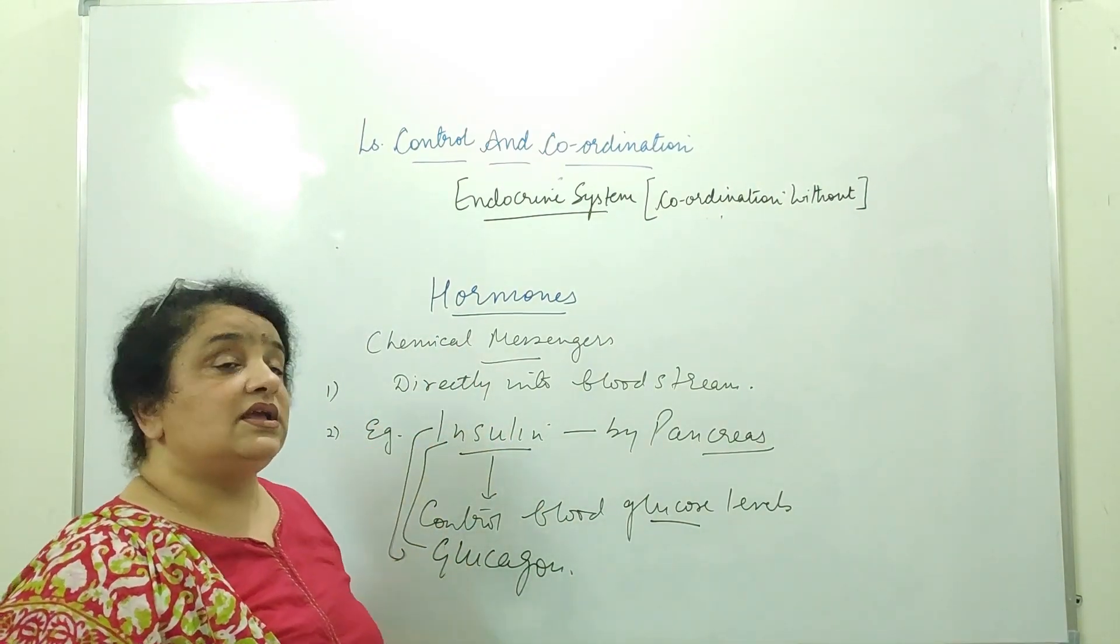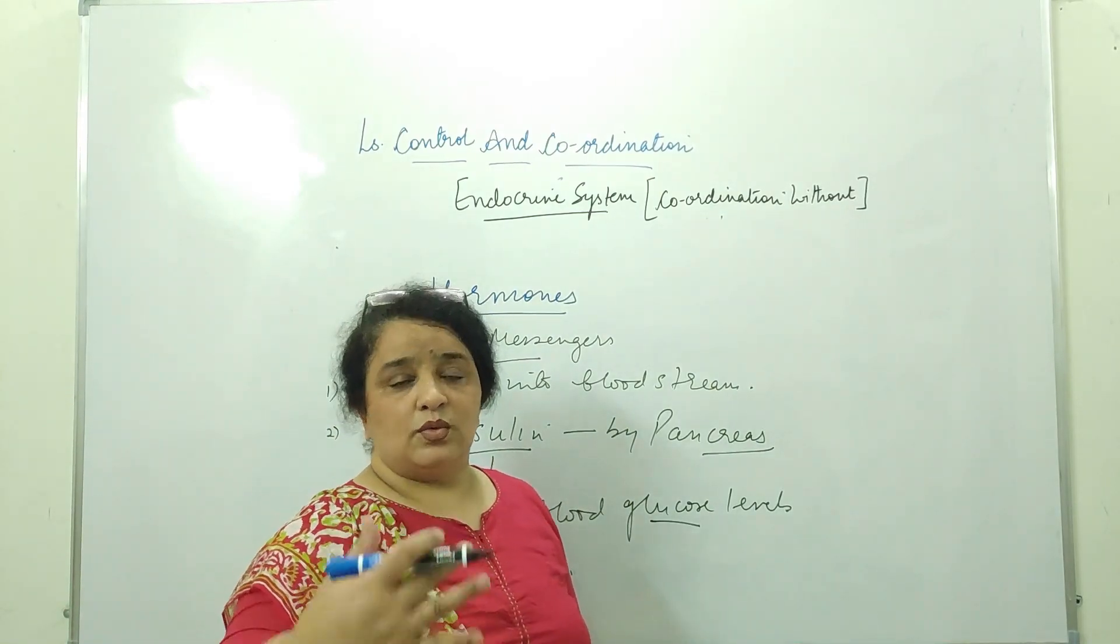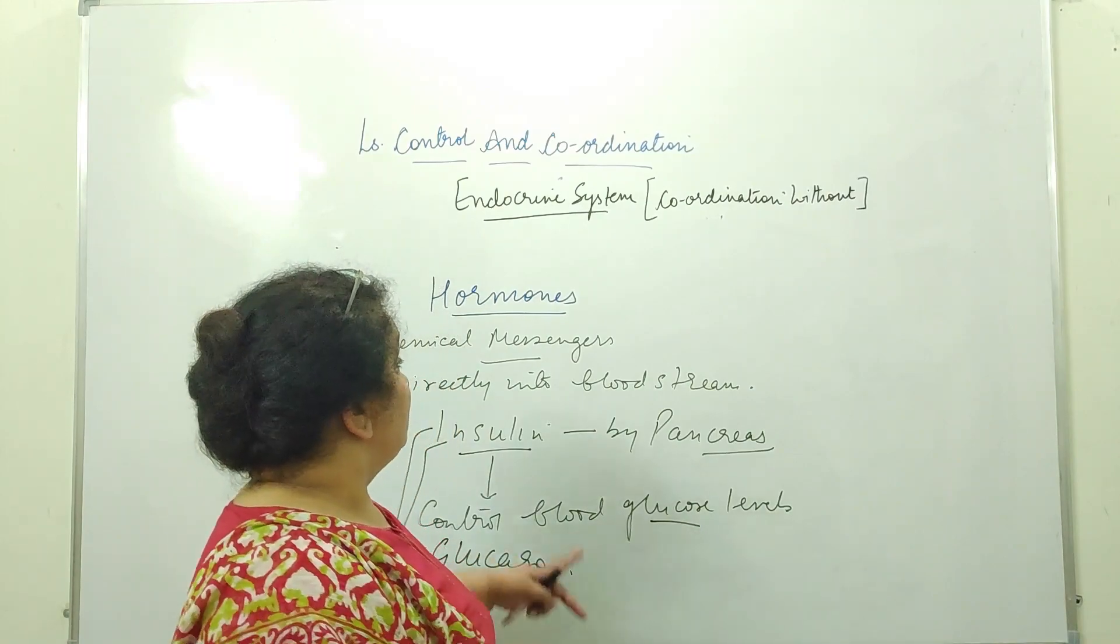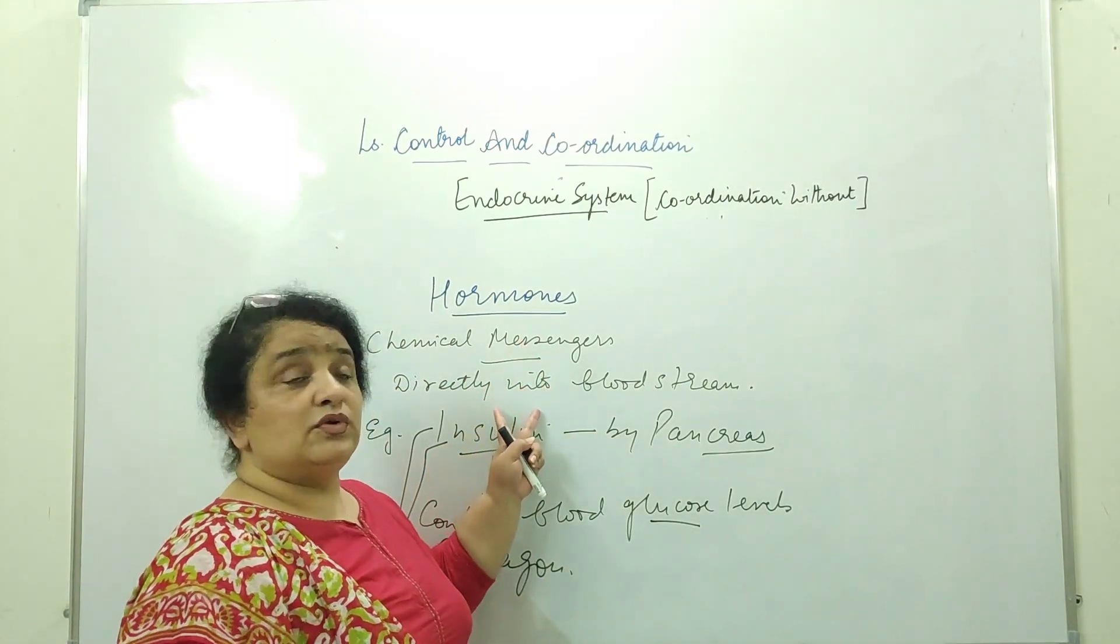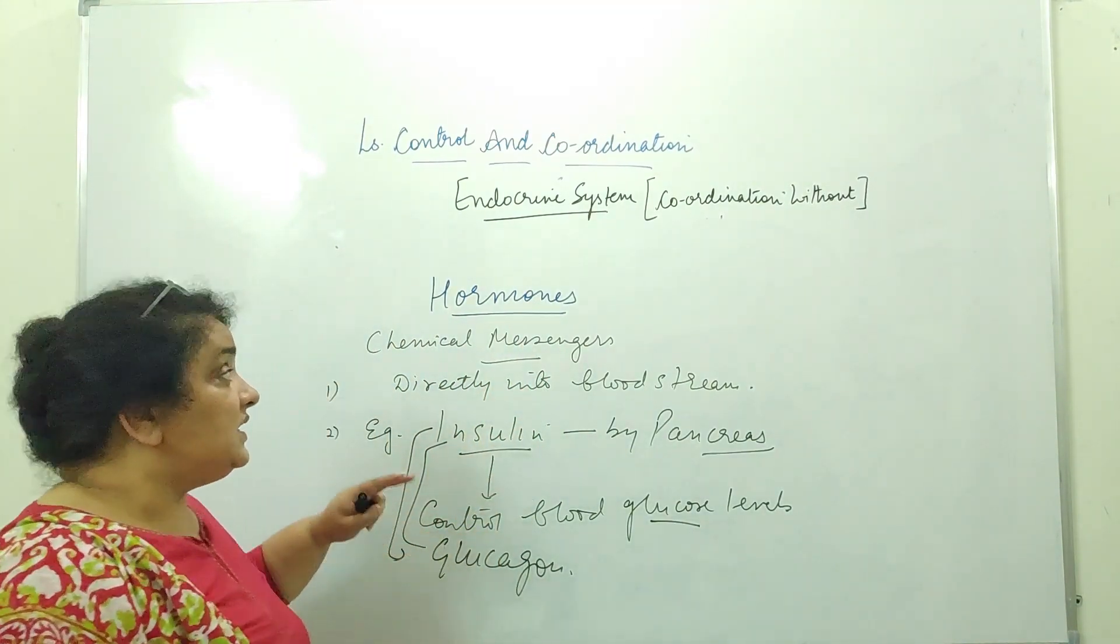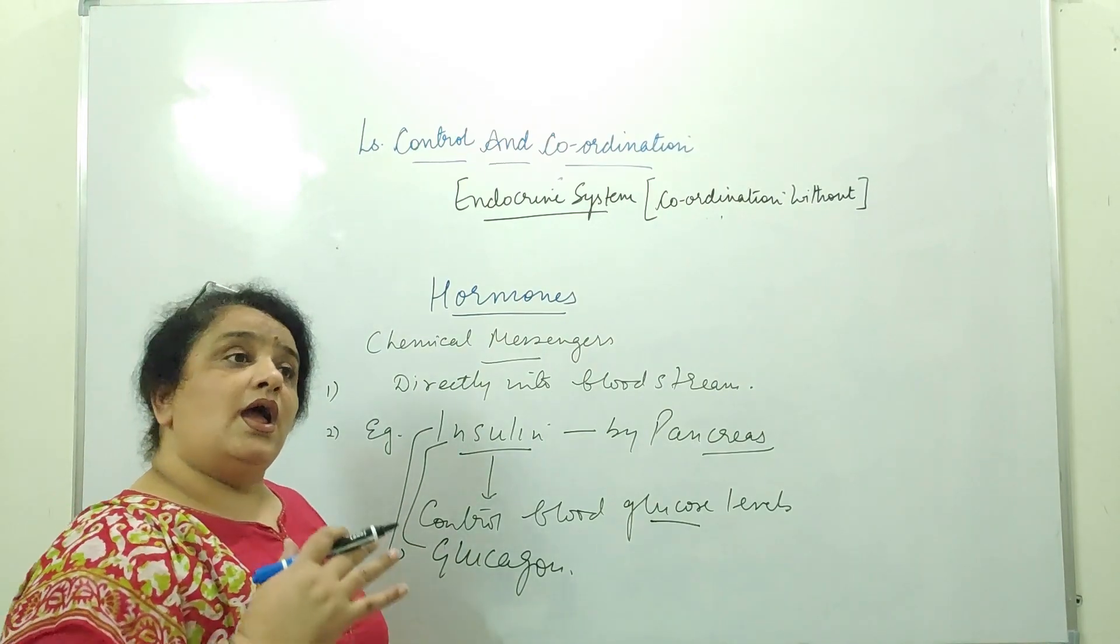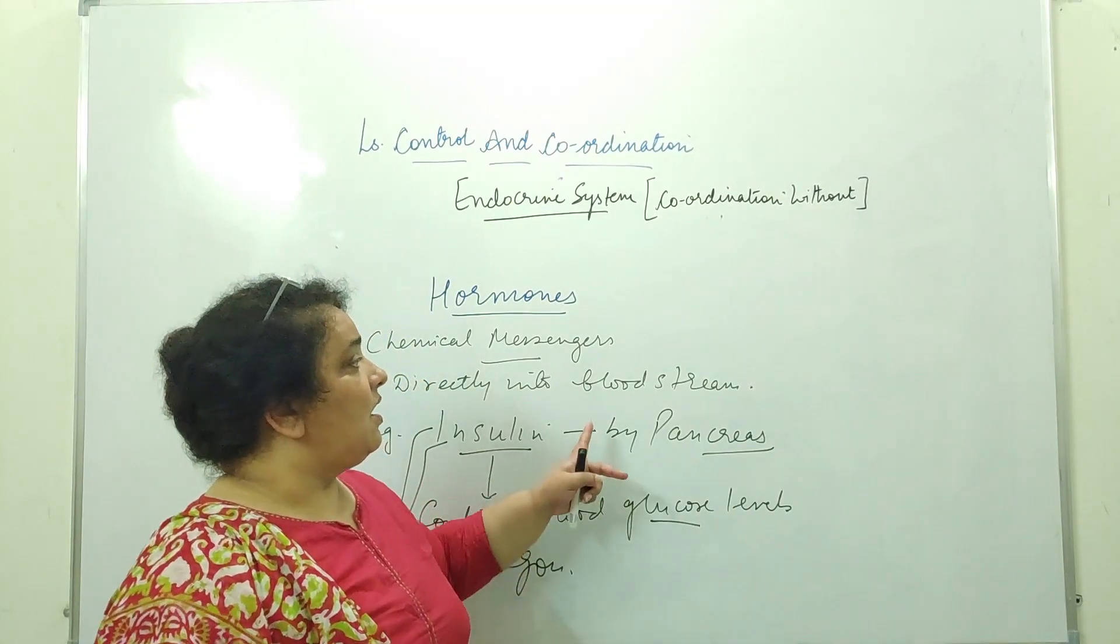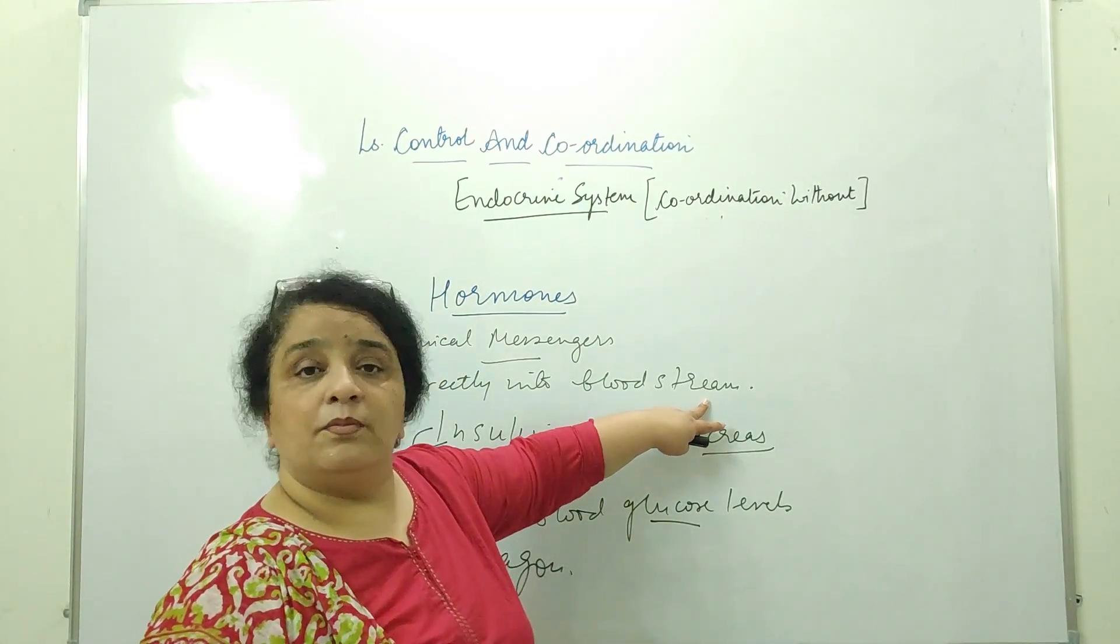So what are hormones? They are the chemical messengers which control the various metabolic activities in the body. Another important feature is that they are secreted at the point where they are not required, but wherever they are required they are transported with the help of bloodstream.